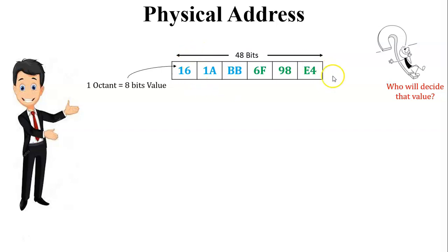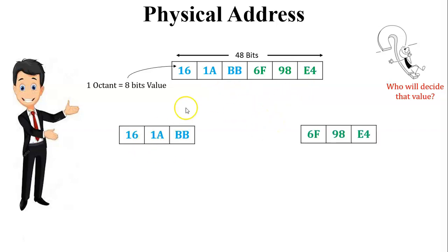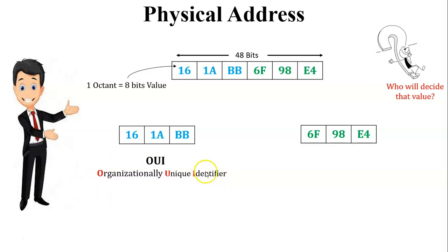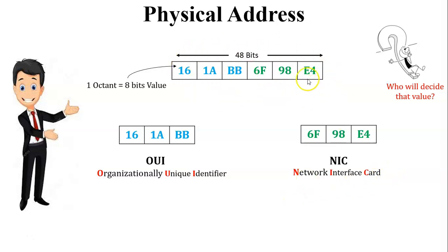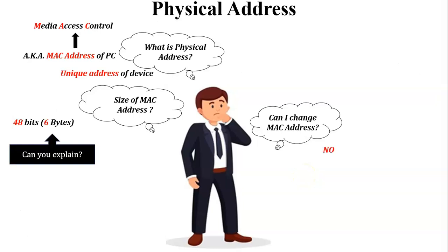Who decides the MAC address numbers? The 48 bits are divided into two parts of 24 bits each. The first 24 bits are decided by the OUI — Organizationally Unique Identifier. The last 24 bits are decided by the manufacturer of the network device. This is the address of the NIC — Network Interface Card — so this is the permanent address of the network interface card.